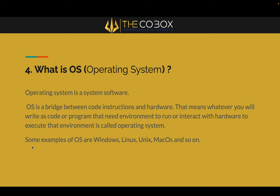Some examples of operating systems are Windows, Linux, macOS, Unix, and so on. Every operating system has its own properties and its own set of instructions. Different languages have different kinds of executable files — for Windows we have .exe, for Mac there is a different file format, for Linux there is a different file format. It depends on the OS. Once you learn a specific course, you will understand how it works.